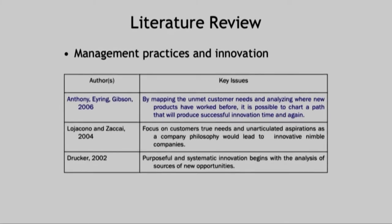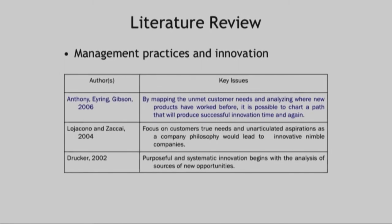Key authors like Anthony, Erring, and Gibson (2006) said by mapping unmet customer needs and analyzing where new products worked before, it is possible to chart a path that produces successful innovation time and again. Drucker (2002) said purposeful and systematic innovation begins with the analysis of sources of new opportunities. Like that you need to come up with key findings for your report.